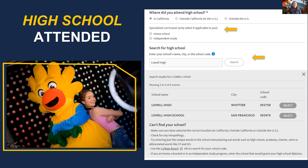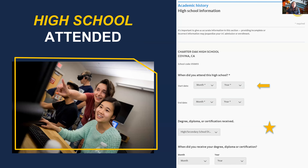Students will also enter dates of attendance and can choose specialized curriculum. For the school they are graduating from, they select certificate or diploma information, the grading system, and the term system. Multiple grading or term systems can be selected for one school. Students should select the grading scale typically used at the school, even if the school assigned pass or credit grades during COVID-19 terms in spring, summer, or fall 2020 and spring and summer 2021.